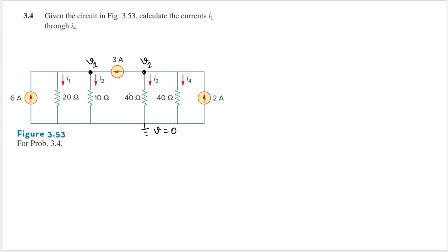Now let's assume the direction of the currents for i1, i2, i3, and i4. We are given that for these branches the current is going down. For the current sources, I'll follow the arrows — these are going up. And for this branch here, the current is going to the right. Now we can do KCL at V1 and KCL at V2.